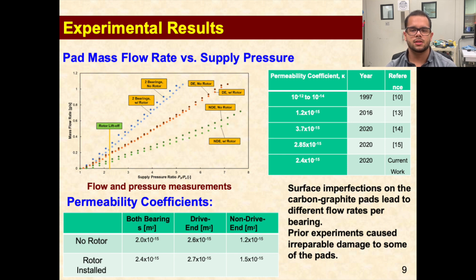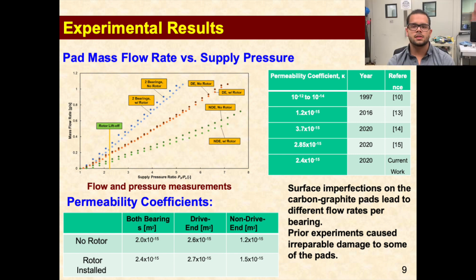We produced six sets of measurements to estimate permeability coefficients in each individual bearing and the whole system, and compared them to those reported in the literature. Flow rate versus supply pressure measurements show a small change between the tests with and without the rotor. However, there is a significant difference between the flow measurements from the drive-end bearing compared to the non-drive-end bearing. The estimated permeability coefficient in the drive-end bearing is almost 1.2 times larger than the non-drive-end bearing, likely due to wear and tear in the pads installed in the non-drive-end bearing. Even with these large differences, the derived permeability coefficients for both bearings — 2.4×10⁻¹² meters squared — lie within the reported values in the literature, although those reported by Bowen and Dr. San Andres in 2020 are higher than those estimated from flow measurements into both bearings simultaneously.